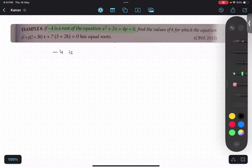x value is a root. Therefore, I can say x value is minus 4. Then substitute minus value minus 4. So minus 4 square plus 2 bracket minus 4 plus 4p equals 0.